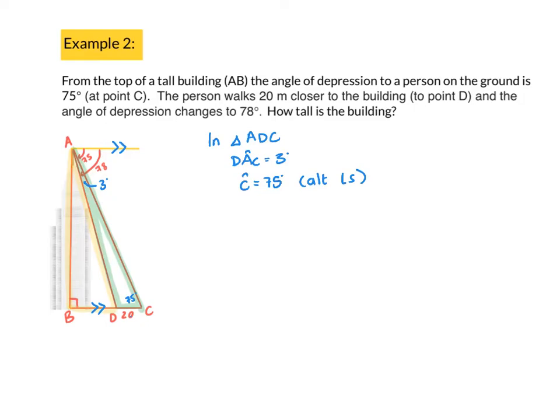Now I have enough information to work out AD. So AD, I'm going to use the sine rule because I've got a pair that are opposite each other. AD out of sine of C is equal to DC out of sine of DAC. Let's put our values in. AD is equal to, I know that DC is 20. I know that DAC is three degrees. And I'm going to multiply both sides by sine of C. So I'm going to be multiplying by sine of 75 degrees. So if I take out my calculator and I work that out, I'm going to get AD's length is 369.12512. So that length is 369.12512 meters.